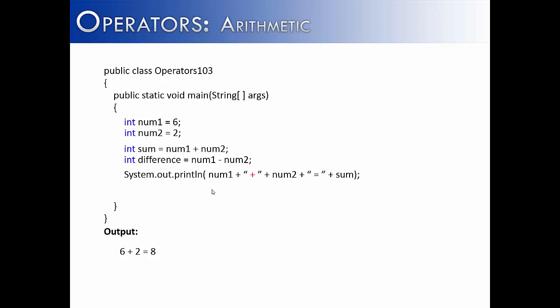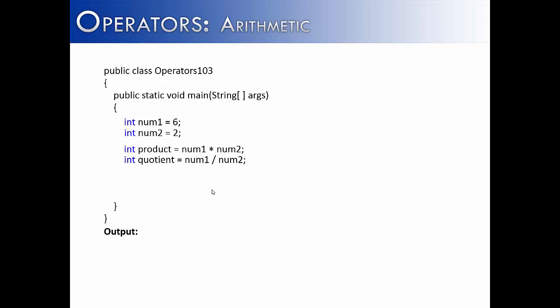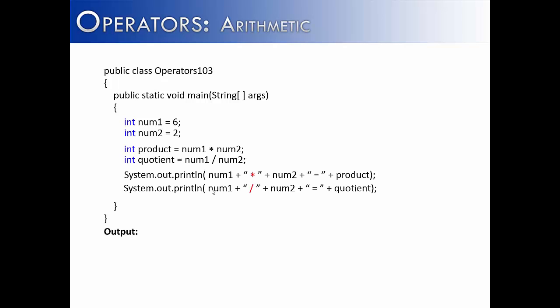If we wanted to do a similar operation with minus, we could do num1 minus num2 and get the difference, then print it out — so it would say '6 minus 2 equals 4'. We could do the same thing with multiplication and division. The print line statements would look very similar; the only thing changing are the string literals and, at the end, product and quotient. When it prints out, it would look like '6 times 2 is 12' and '6 divided by 2 is 3'.